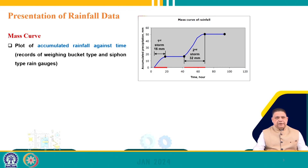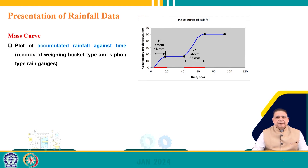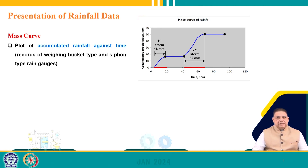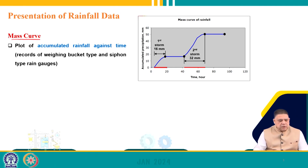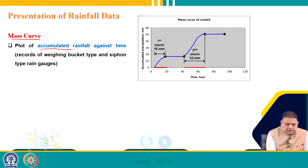Coming to presentation of rainfall data — if you remember in the previous lecture, we discussed measurement of rainfall using an instrument called the rain gauge, which is of two types: recording and non-recording. Non-recording is Simon's rain gauge; recording types include float type, siphon type, weighing bucket, and tipping bucket. These rain gauges, besides radar and satellites, are used for measuring rainfall. Once data is measured — typically by India Meteorological Department — it has to be preserved and presented. One of the most common ways is the mass curve, which is a plot of accumulated rainfall against time.